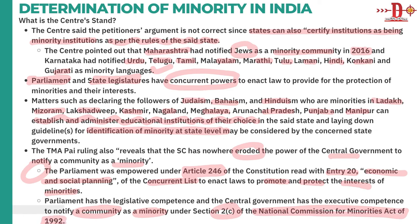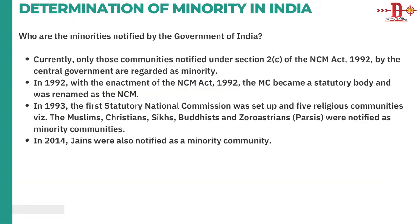The communities notified as minorities by the Government of India using Section 2 of the NCM Act 1992 are regarded as minorities. When the NCM Act was enacted in 1992, the Minorities Commission became a statutory body and was renamed NCM. In 1993, when the first statutory national commission was set up, five religious communities were notified as minorities: Muslim, Christian, Sikh, Buddhist, and Zoroastrian. In 2014, Jains were also added as a minority community.